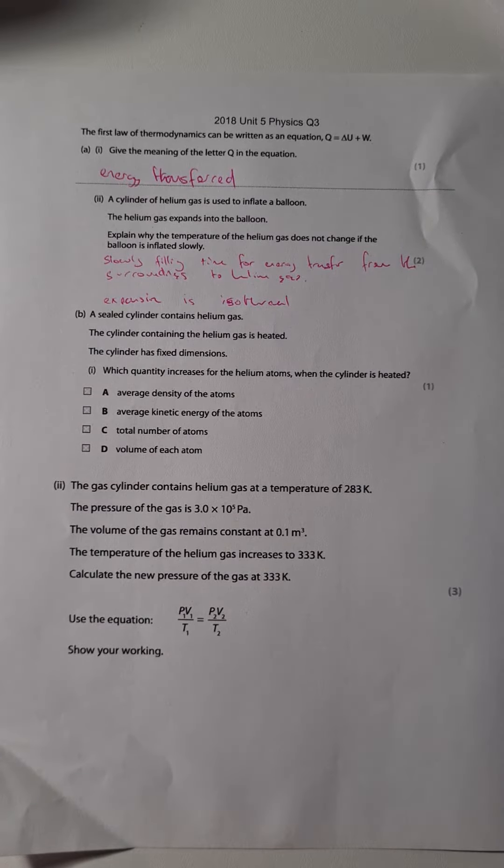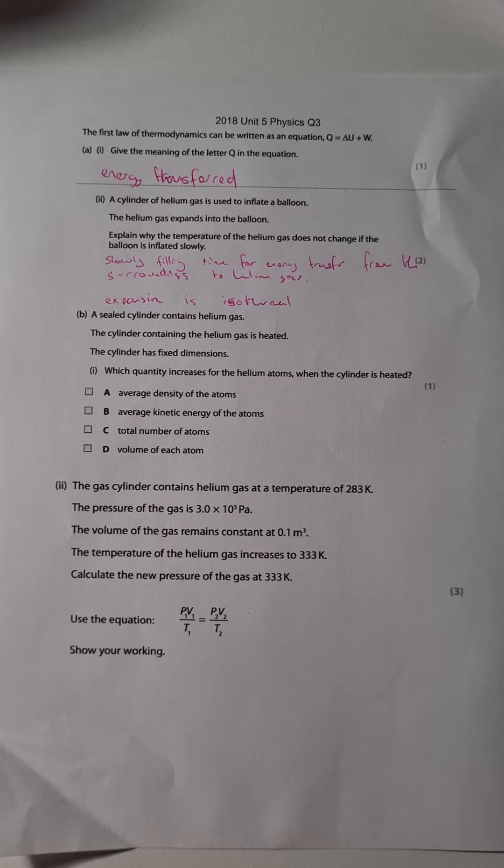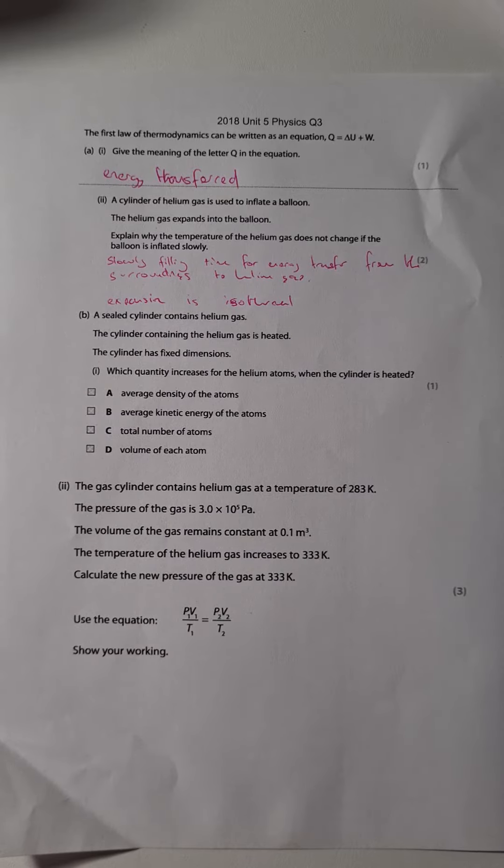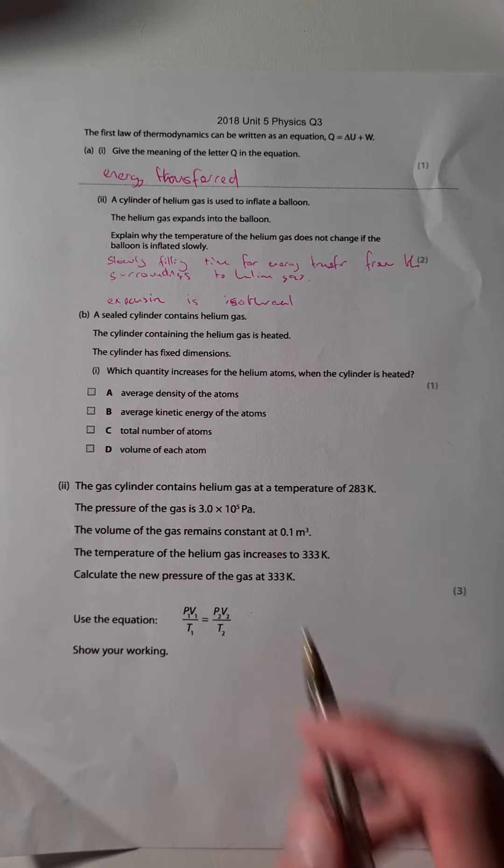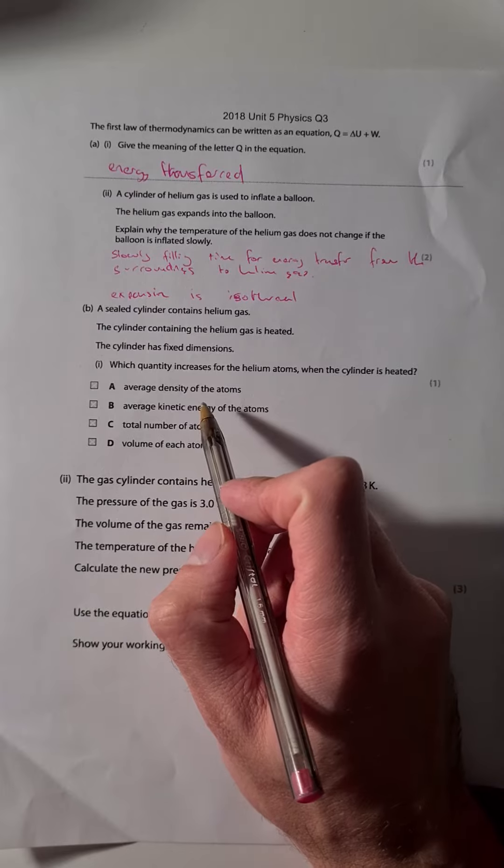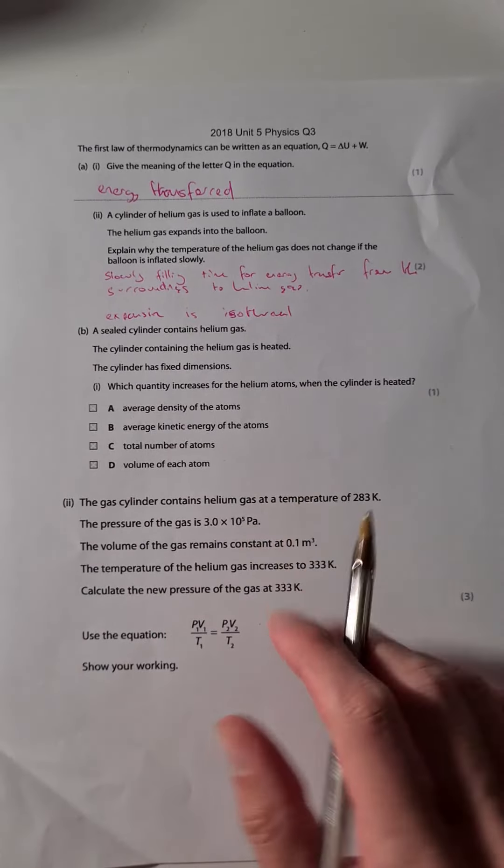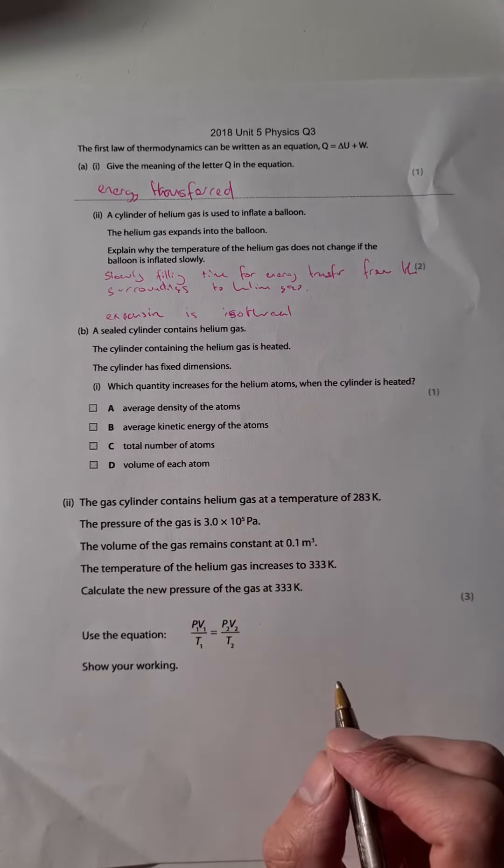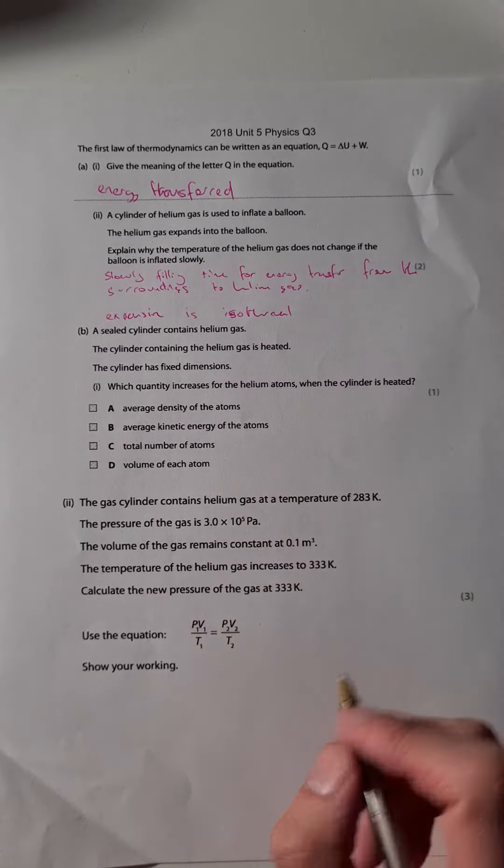Part B: A sealed cylinder contains helium gas. The cylinder containing the helium gas is heated. The cylinder has fixed dimensions. Which quantity increases for the helium atoms when the cylinder is heated? The average density of the atoms - that's got really nothing to do with heating it up. If we had six atoms at low temperature and then we heat it up in the same size space, we've still got six atoms in there.